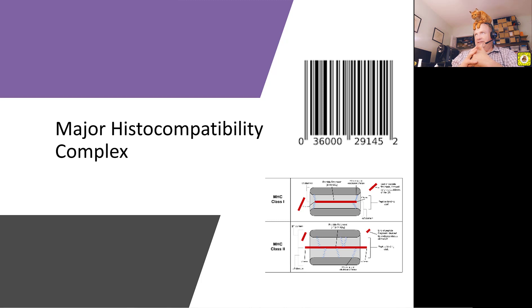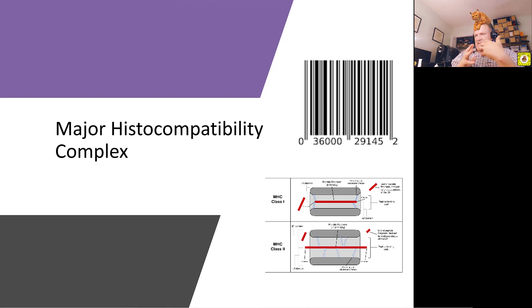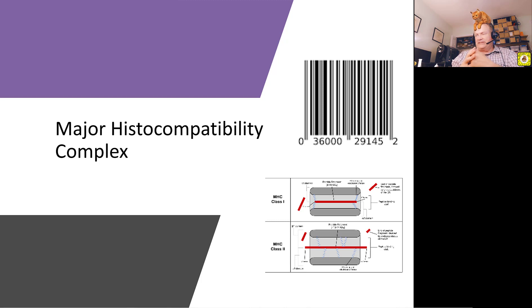We call that the major histocompatibility complex. The virus hijacks one of those barcode areas — it's a shape of charge, a protein shape with structure and function. The immune system uses it to ask: is this part of you or not? If not, we're going to destroy it. If it is you, we leave it alone — that's recognized as what we call self.